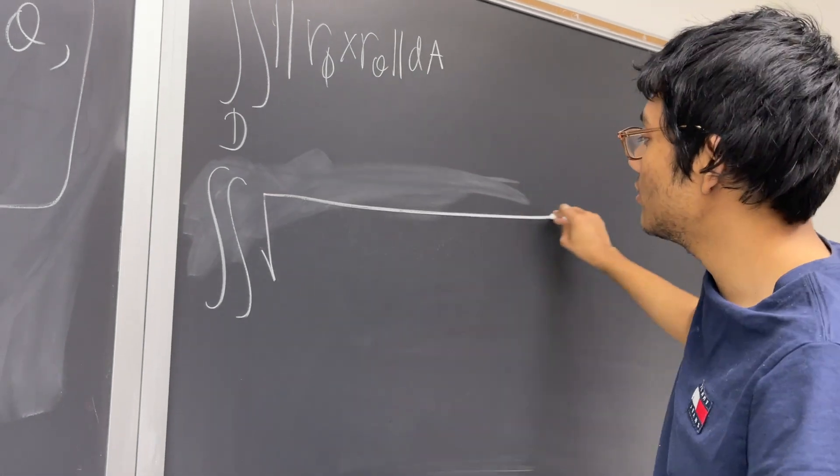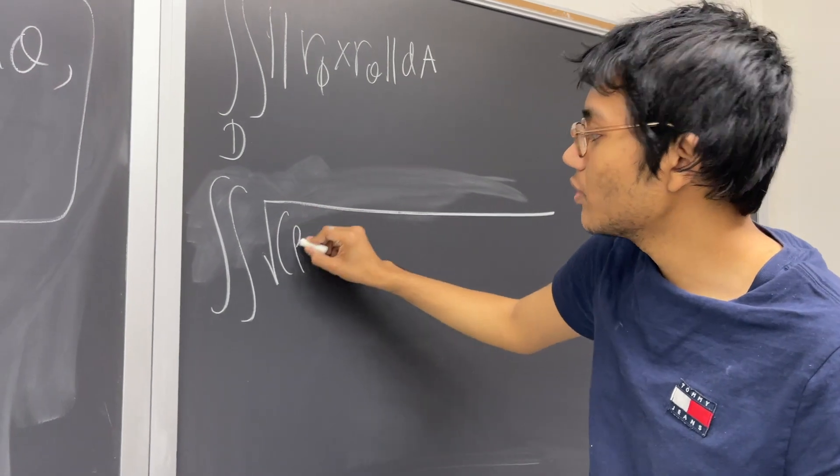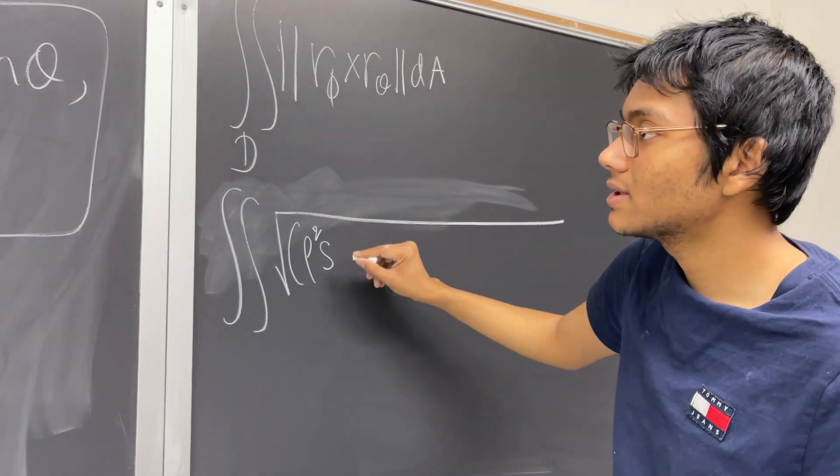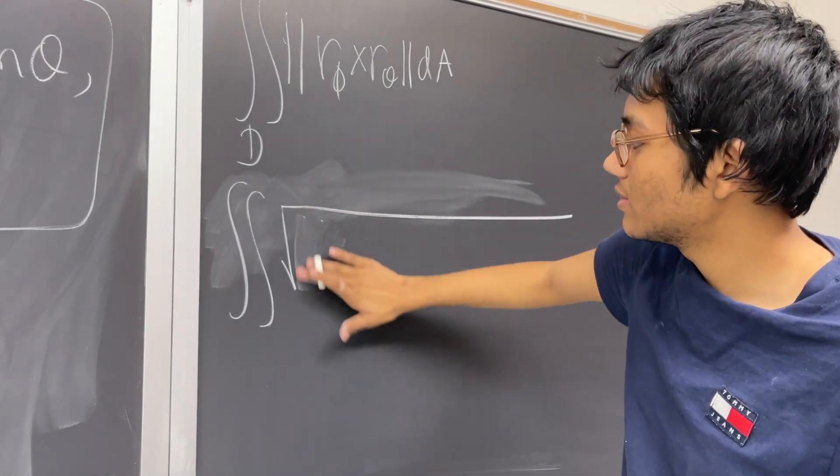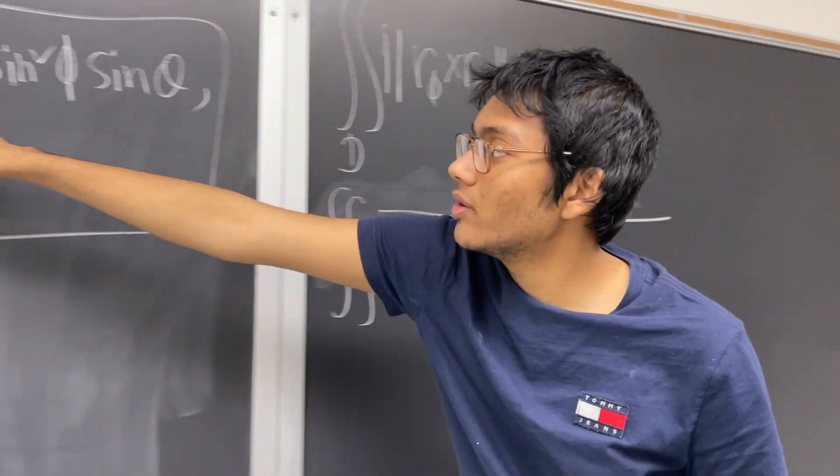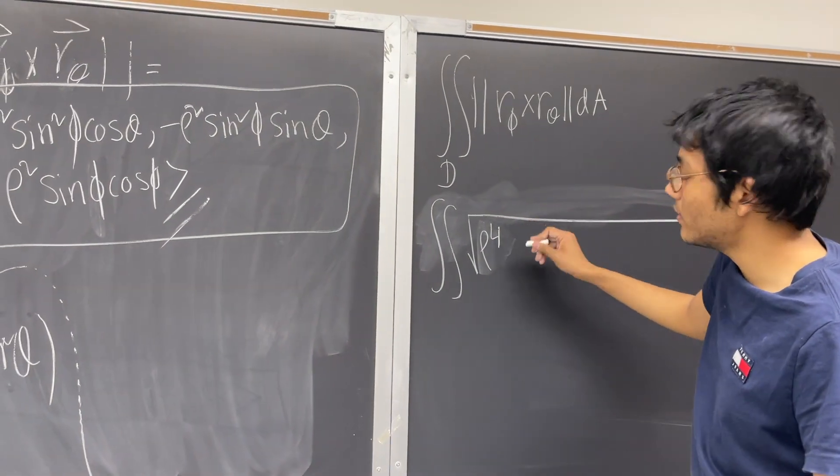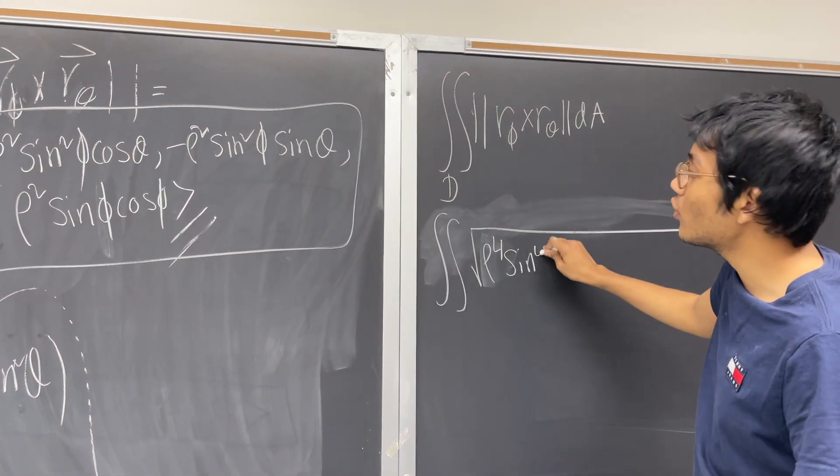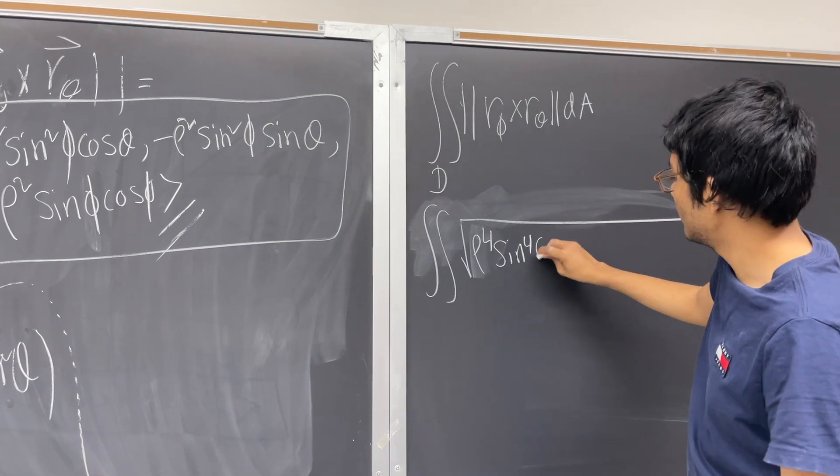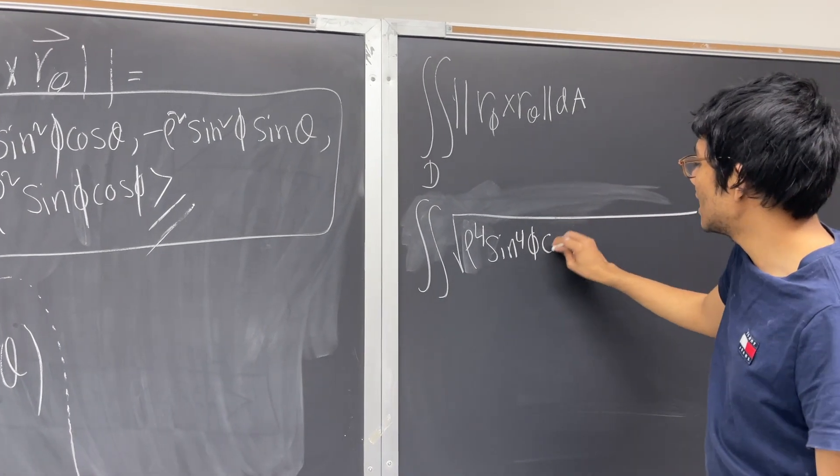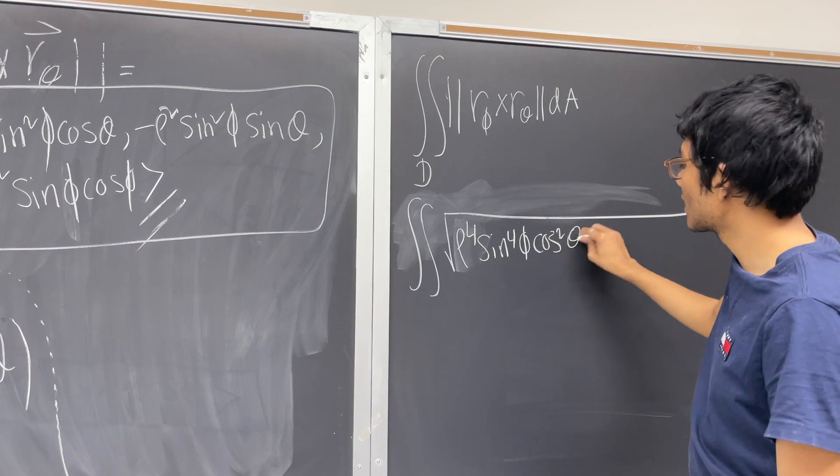All I'm doing is I'm calculating the magnitude of the cross product I calculated in the previous episode. So I'm going to have the square root of rho squared sine. Let's do it without wasting too much space. I'm squaring my x component, so that's going to turn into rho to the fourth power, sine to the fourth power phi, cosine squared theta.